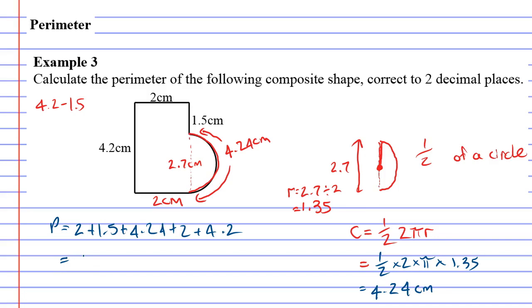Let's see what we get. So we have 2 plus 2, plus 4.2, plus 1.5, plus 4.24, and I get 13.94 cm for our total perimeter. Take care.